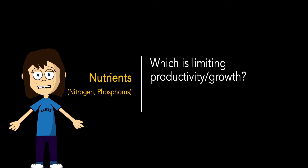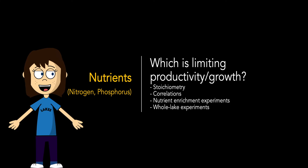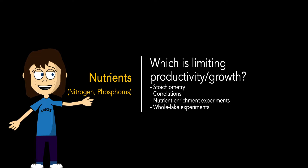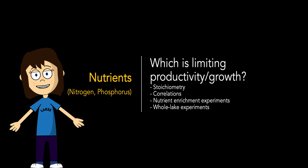So how do limnologists determine what's limiting growth? Here are a few ways. We can think about the stoichiometry of the available nutrients. We can do comparative analyses across lakes and look at correlations. We can also perform nutrient enrichment experiments, either in the lab or in the field. And if we're able to, we can conduct whole lake experiments.